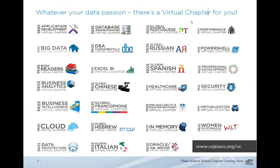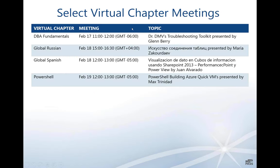Whatever your passion, there is a virtual chapter for you. We have quite an extensive list of virtual chapters — just go to your PASS profile, log in, and associate yourself with the different virtual chapters. You'll get emails with the links to their meetings. Most virtual chapters do record their presentations. Ours is being recorded today and will go to our archive page once the recording is uploaded, so you can always go to our website and view past lectures.